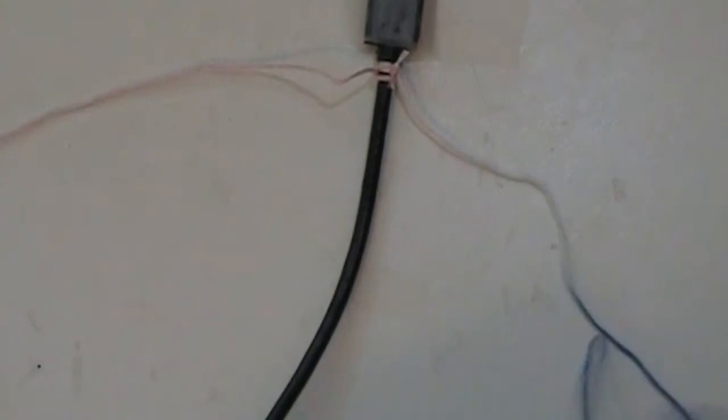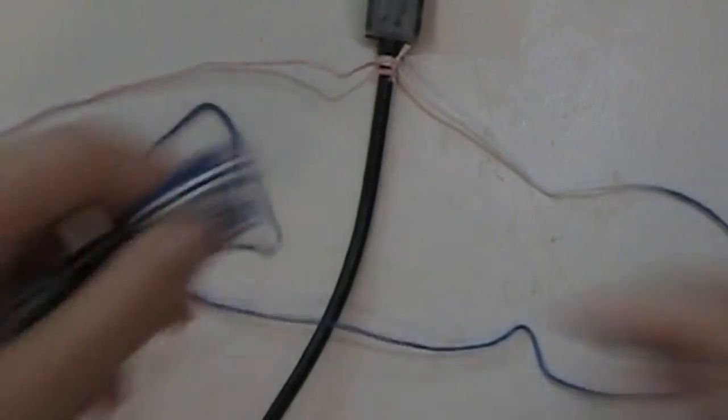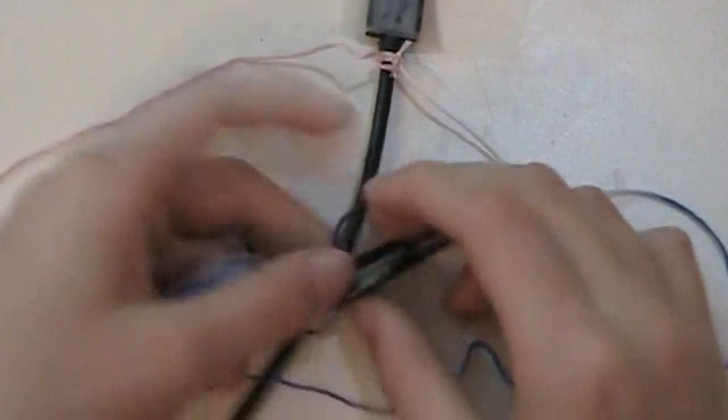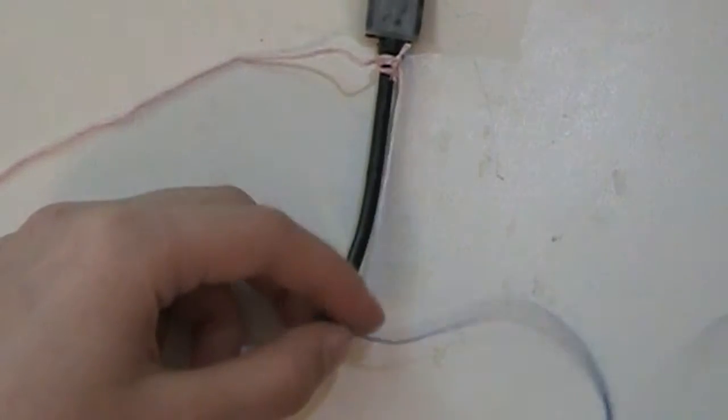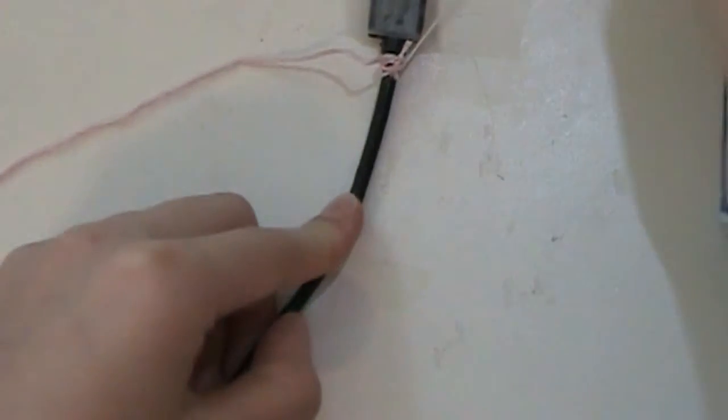Now I'm going to do the same thing with my right strand. I'm going to make sort of like a four shape, go underneath, and come back out, and then slide it up.